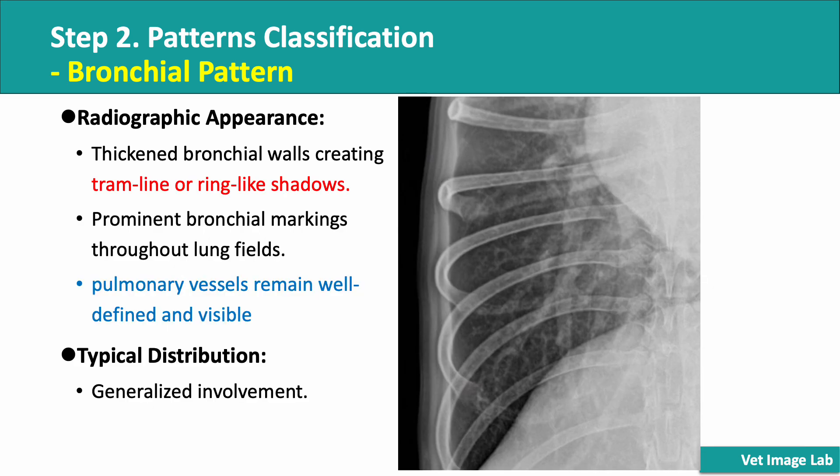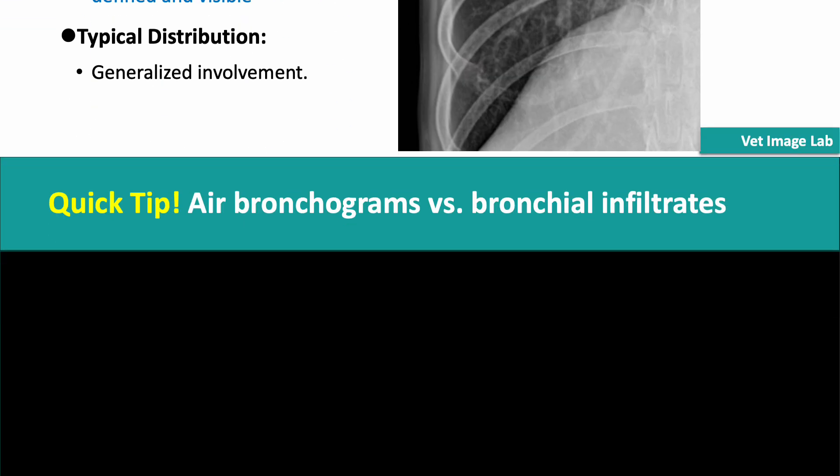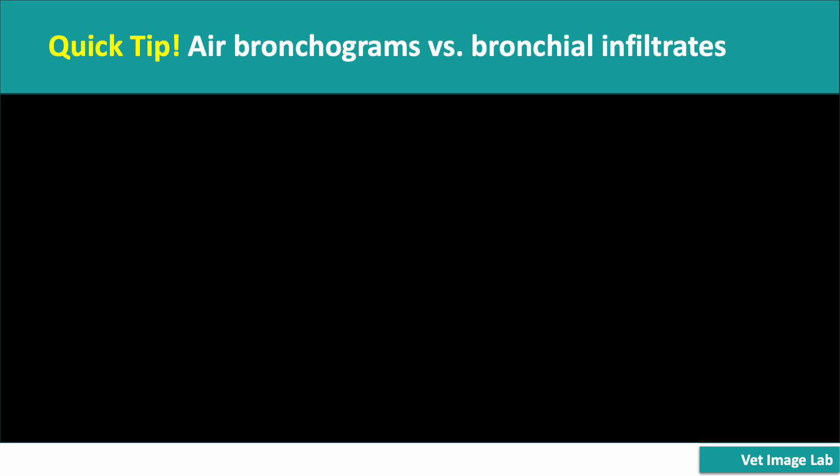In this magnified radiograph, you can see the bronchial infiltrates more clearly, highlighted by the thickened bronchial walls. Even though the airways are more prominent, notice how the pulmonary vessels remain well-defined and visible. Are you confusing the air bronchogram seen in alveolar infiltrates with the tramline appearance of bronchial wall thickening? It's an easy mistake to make, but don't worry, we're going to clear it up right now.